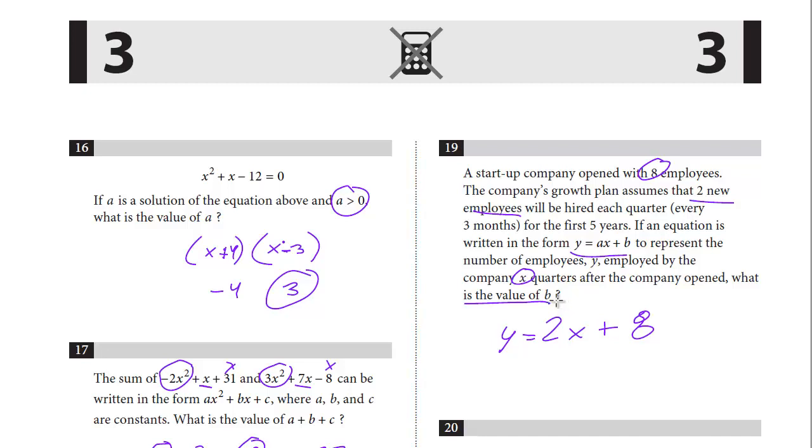You didn't really have to write this equation out. I just did it to review the concept. But as soon as you see this type of question, they're just really asking for the fixed initial amount, the Y-intercept before any growth, and it's eight. That is it.